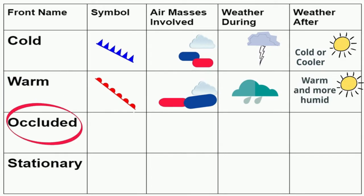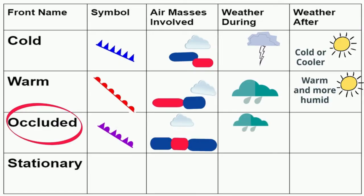An occluded front, here's the symbol. Notice that you have warm air sandwiched between cold air. An occluded front has three air masses involved. Warm air gets caught between two cold or cooler air masses. Along an occluded front you can see rain or snow and it may be heavy, or this front may have weather similar to a cold front which will include thunderstorms. After an occluded front passes you will have fair skies and cooler air.